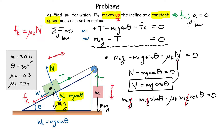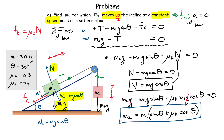Simplifying by canceling the g terms and isolating m2, I factor out m1 to get: m2 = m1(sine θ + μk cosine θ). Substituting values — m1 = 3 kg, θ = 30°, μk = 0.3 — into the calculator gives m2 = 2.28 kilograms. That is the value of m2 for which the block moves up the incline at constant speed once set into motion.